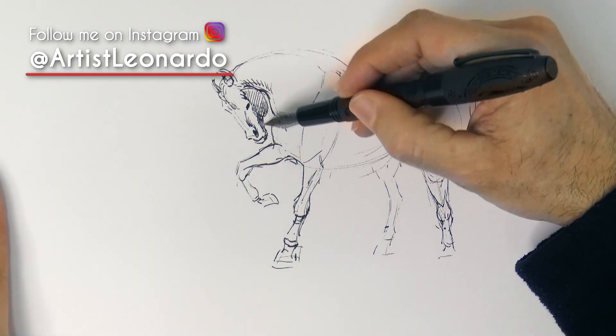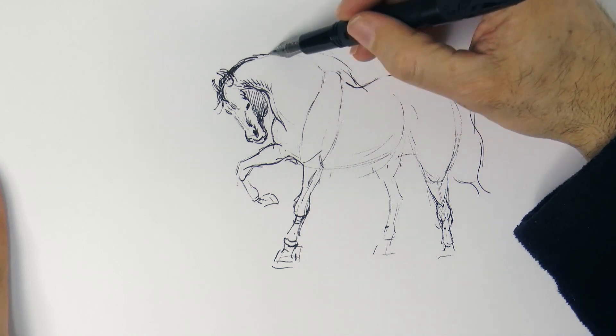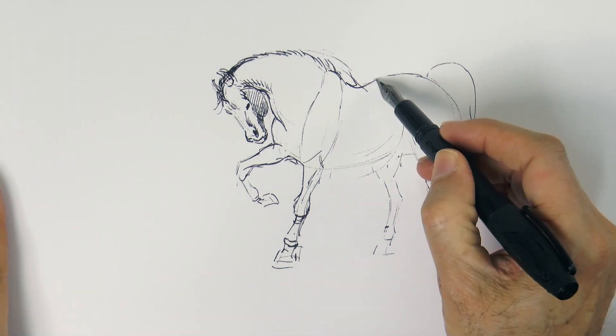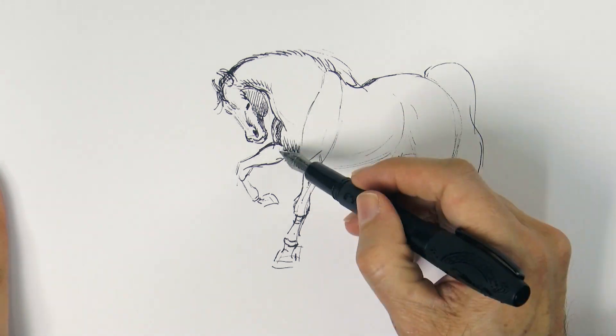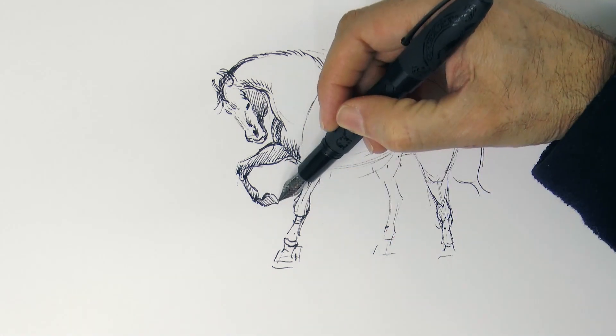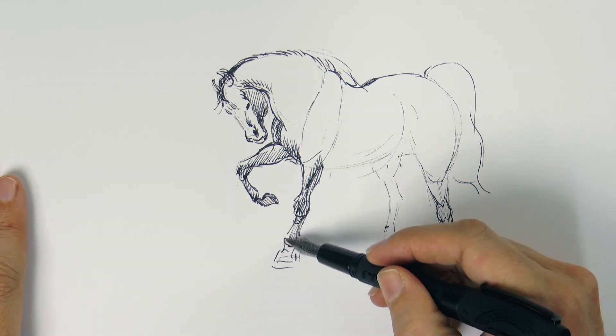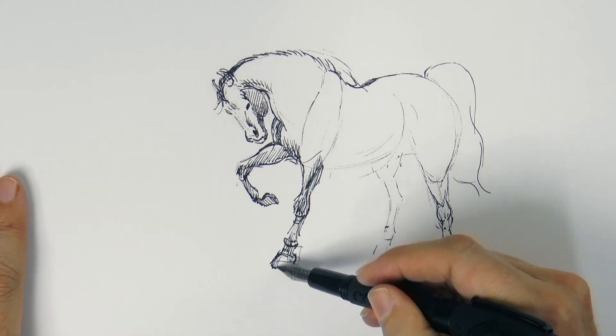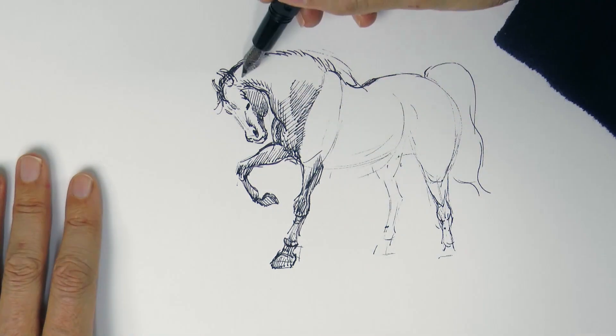When doing so, remember that you can use the shading lines in order to convey the volume of each part. Wrap your lines around the shapes. You don't need to do this always, but you can do this to help you represent the volumes as if drawing on the actual rounded object.